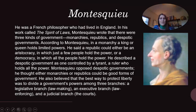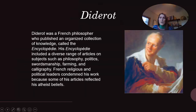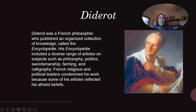Diderot was a French philosopher who published an organized collection of knowledge called the Encyclopédie. His Encyclopédie included a diverse range of articles on subjects such as philosophy, politics, swordsmanship, farming, and calligraphy. French religious and political leaders condemned his work because some of his articles reflected his atheist beliefs.